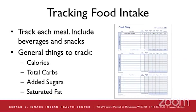Tracking food intake is also important. You can do this in a food diary or any type of diary you can get in the store, and you track each meal — this includes beverages and snacks. Generally, you want to track calories, your total carbs, added sugars, and saturated fat. You can do this using apps like Weight Watchers, where you can put in the type of food and it will give you the calories, carbs, added sugars, and saturated fat. Also look at labels if your food has labels, or use calorie counters online if you're cooking from scratch.